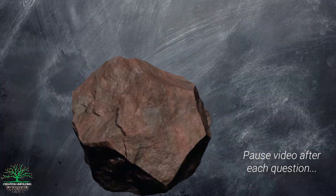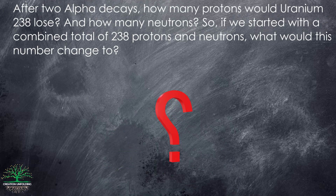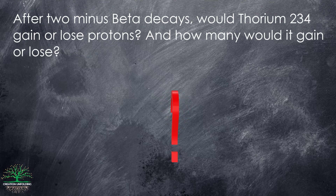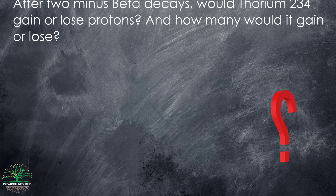Let's test your knowledge. If a rock originally had 100 uranium-238 atoms but now only has 50, how much time has elapsed, assuming a half-life of 4.5 billion years? After two alpha decays, how many protons would uranium-238 lose, and how many neutrons? If we started with a combined total of 238 protons and neutrons, what would this number change to? After two minus beta decays, would thorium-234 gain or lose protons, and how many?